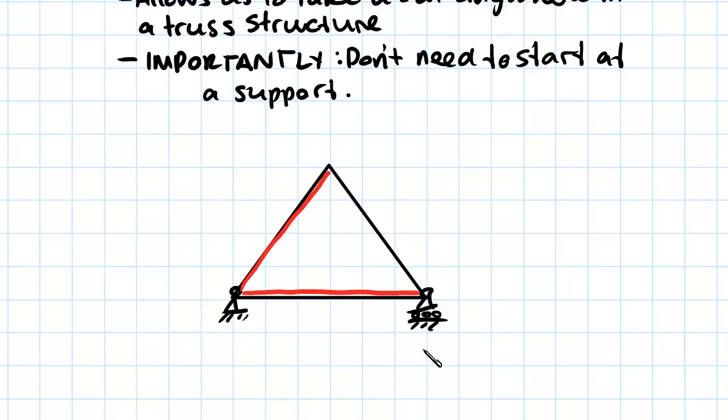For this question, it wouldn't matter whether or not you use a method of joints or a method of sections. So the method of section way, basically what we'd be doing is we'd be taking a cut through the members that we're trying to find. So we'd take a cut through here and we'd work out the forces accordingly.